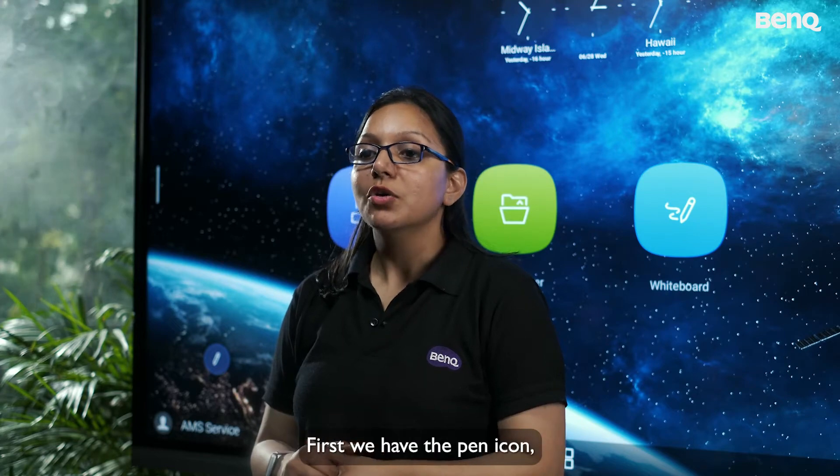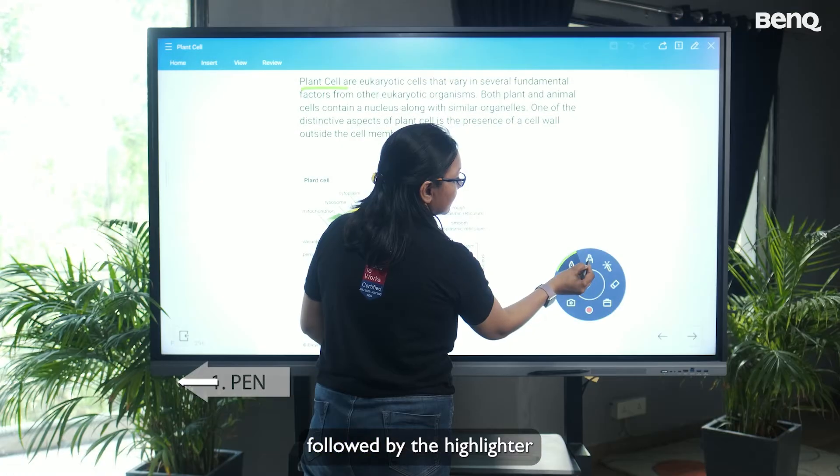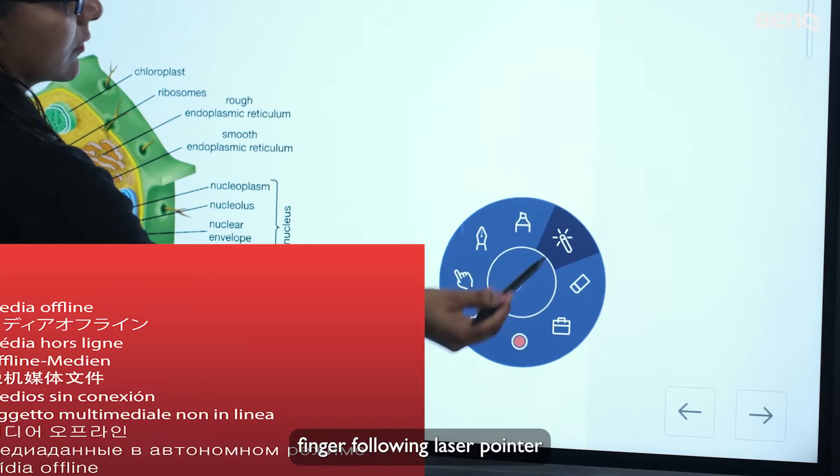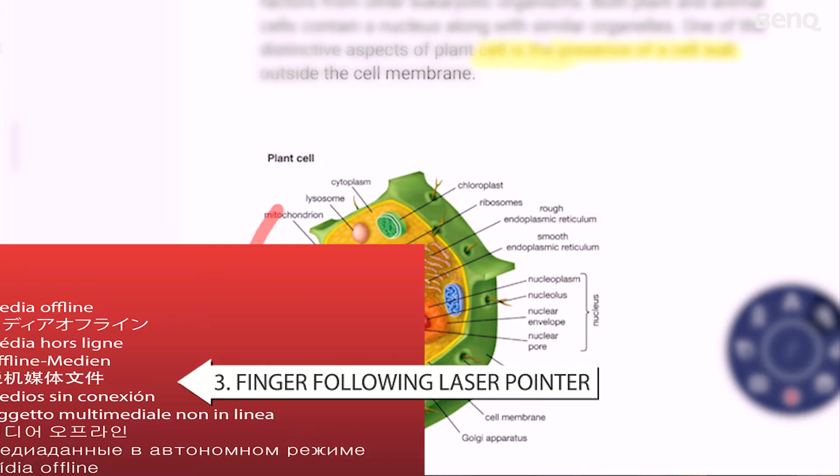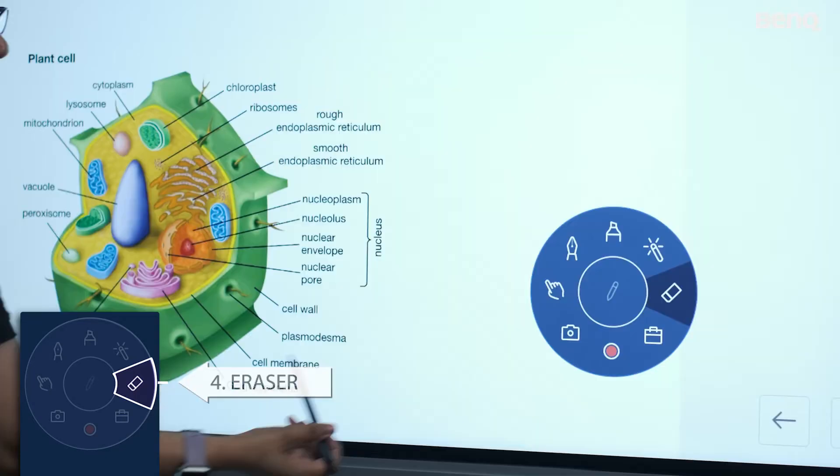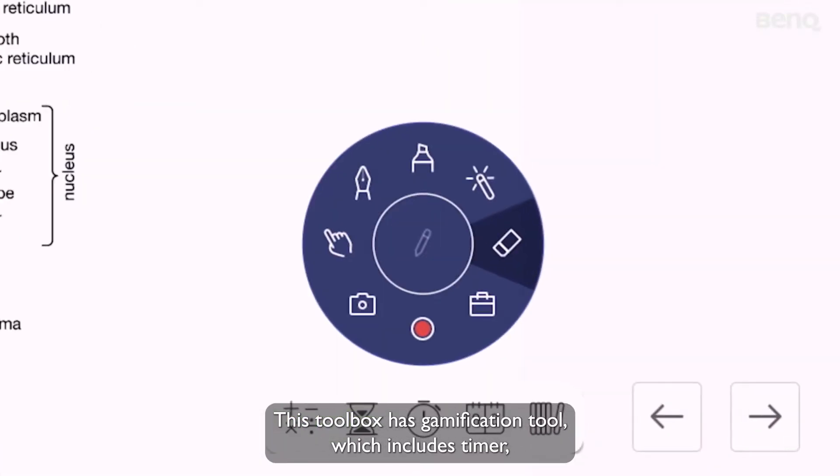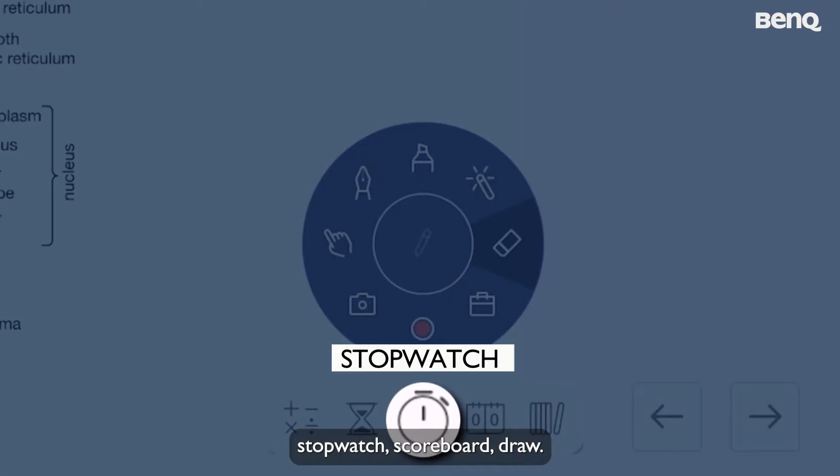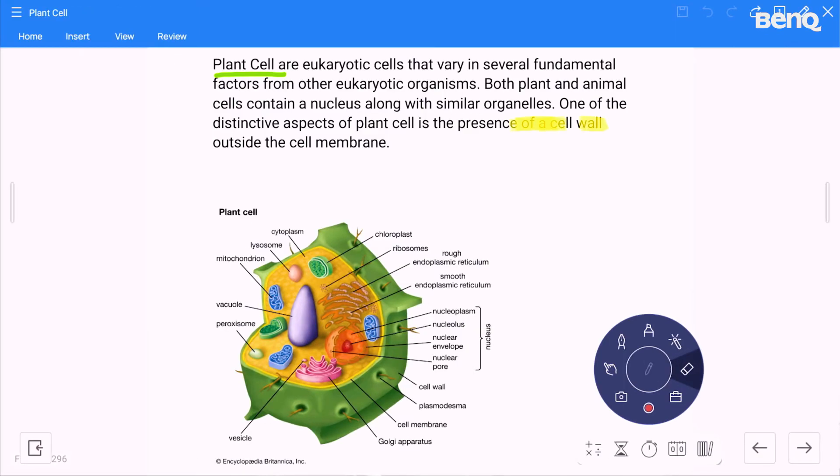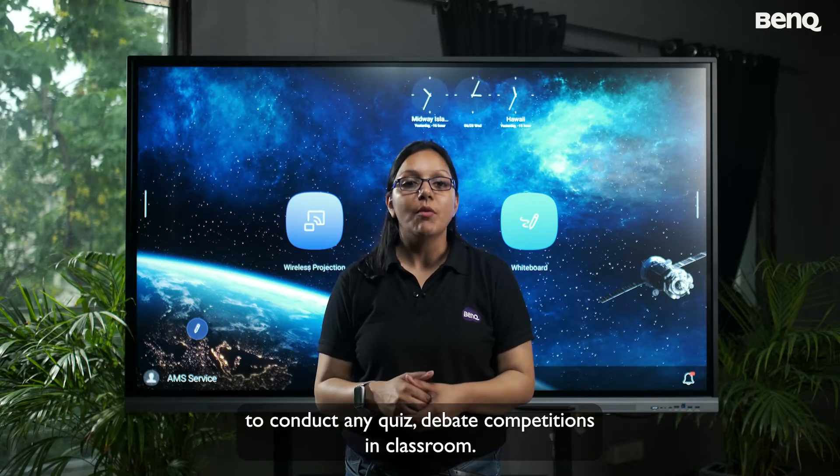Going clockwise, first we have the pen icon, followed by the highlighter, finger, falling laser pointer, eraser, tool box. This tool box has gamification tool which includes timer, stopwatch, scoreboard, draw. This gamification tools are very helpful for teachers to conduct any quiz debate competitions in classroom.